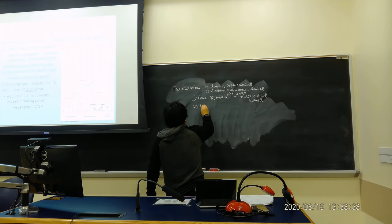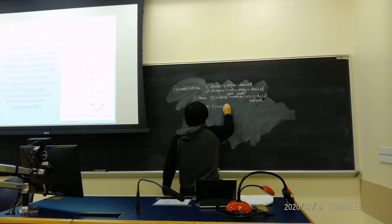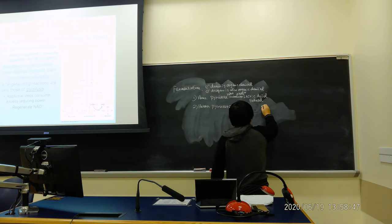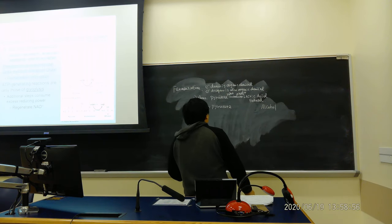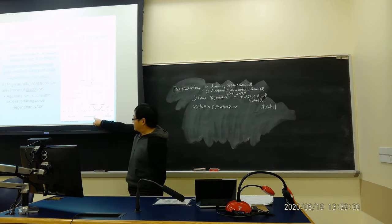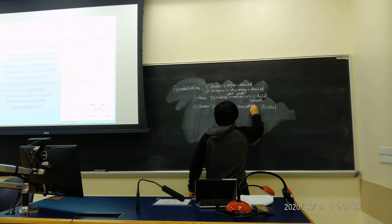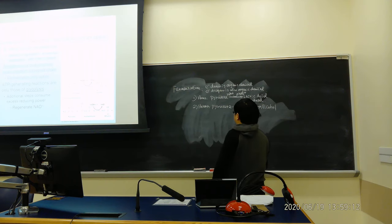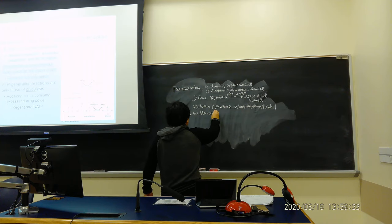The second type we call hetero fermentation, in which pyruvate at the end will become alcohol — that is why wine has alcohol generated. But don't forget there is an intermediate product, which is acetaldehyde, and then it becomes alcohol. Both of these happen in the absence of oxygen.